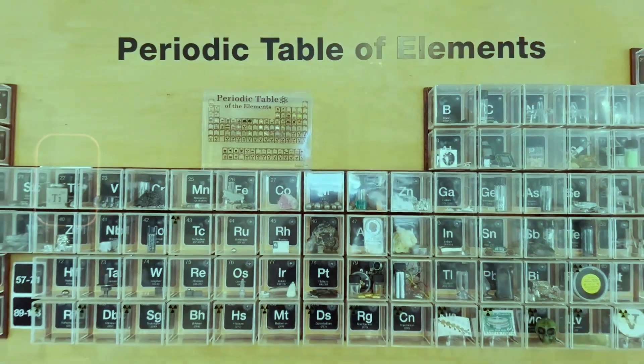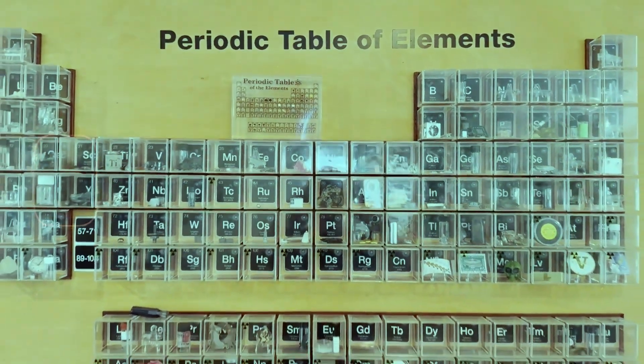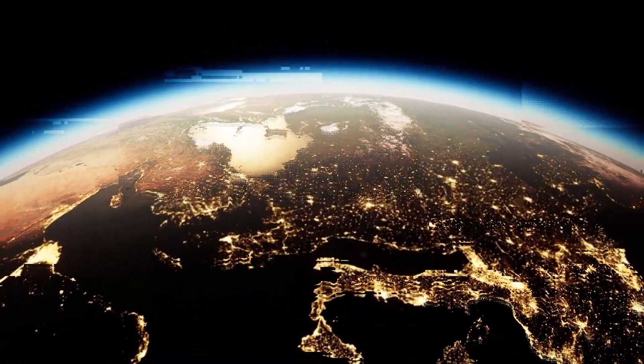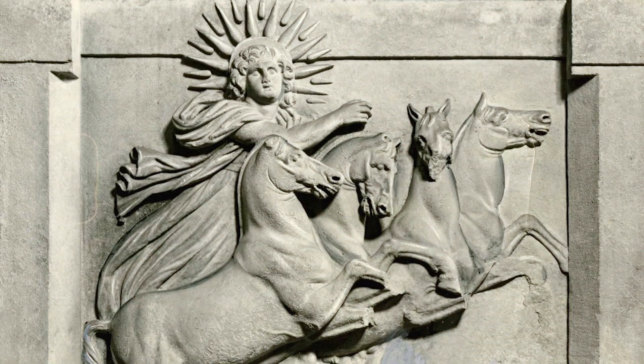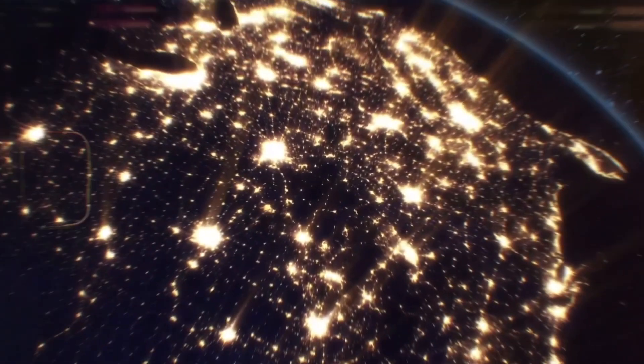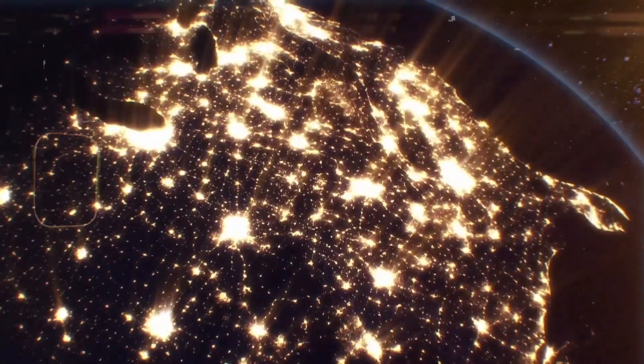Each noble gas has its own story within the periodic table. Helium, the lightest of them, was first discovered not on Earth but in the Sun. Its name comes from Helios, the Greek word for the Sun, because it was detected in solar spectra before being found on Earth.